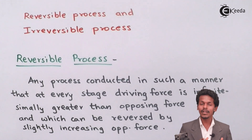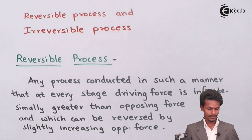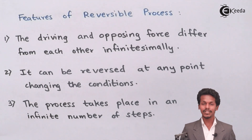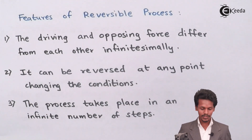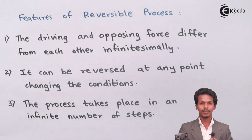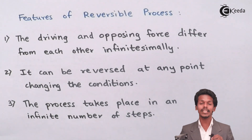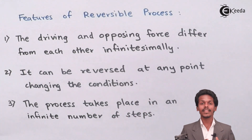That was a short synopsis of what the reversible process means. Now let us understand the features of the reversible process. The first and most important criteria is that the driving force and opposing force differ from each other infinitesimally — that is, a very very minute or small difference, known as an infinitesimal difference.